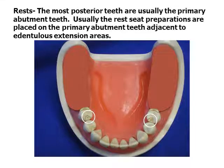Rest placement establishes the axis of anterior-posterior rotation, also known as the fulcrum line. Placement of the rest on the mesial of the tooth allows the use of bar clasps with less trauma to the abutment when the partial is in function.